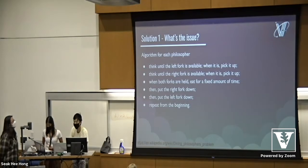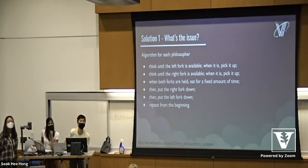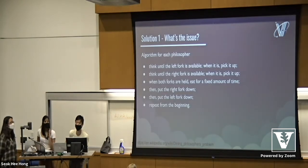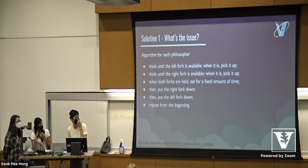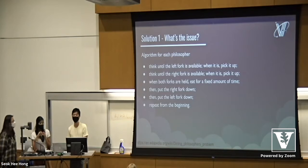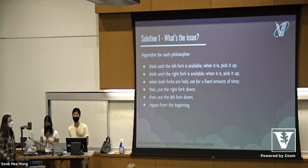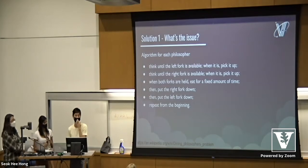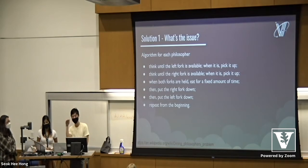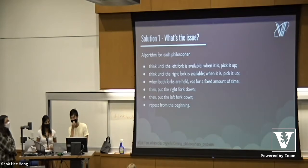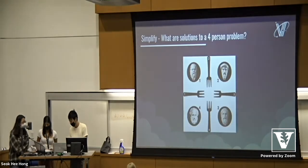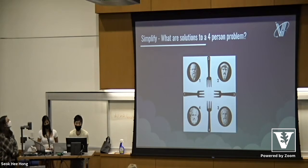Can anyone think of a possibly better solution? Audience suggestion: only pick up the forks when both are available. That's one possible solution, but let's say the philosophers can only pick up one fork at a time — because you can't execute two lines of code at the same time. So you'd have to say: I want to pick up the left fork, then immediately pick up the right fork, or vice versa. But there's still a small chance that you see the left fork, go to pick up the right fork, and the philosopher to your left takes it.